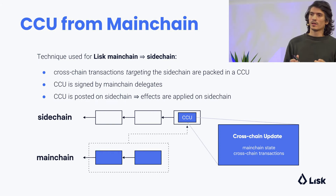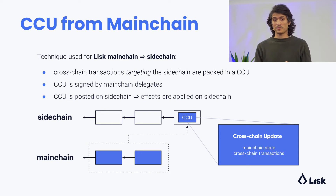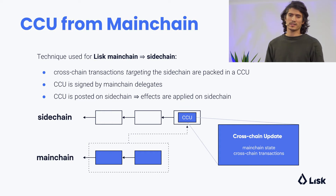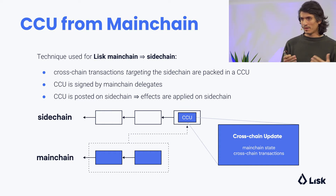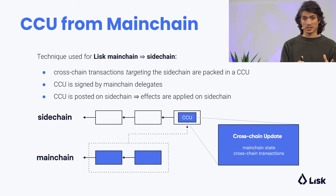In particular, the technique we use to achieve interoperability from the LISC main chain to a sidechain is cross-chain updates from the main chain. In these cross-chain updates, we pack together all the cross-chain transactions that are targeting the sidechain. Then the cross-chain update is signed by the main chain delegates and is posted on the sidechain, where its effects will be applied. The cross-chain update in blue will contain the main chain state, or some information about the main chain, and the cross-chain transactions from the main chain to the sidechain.